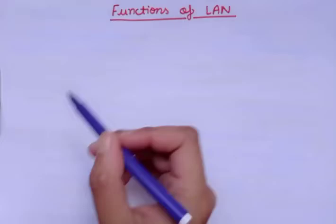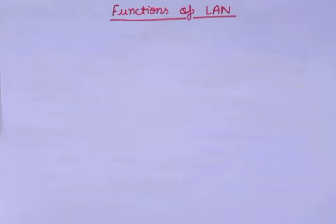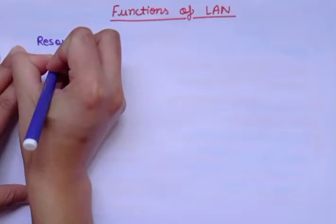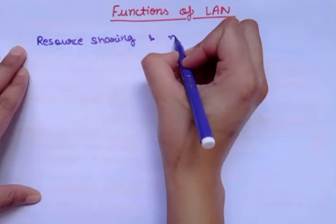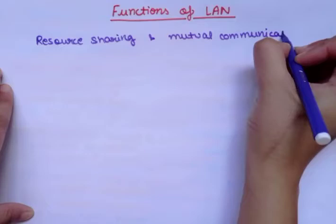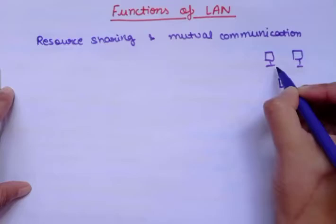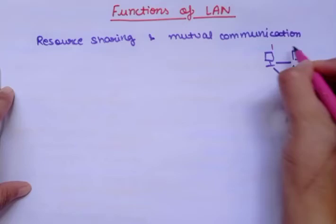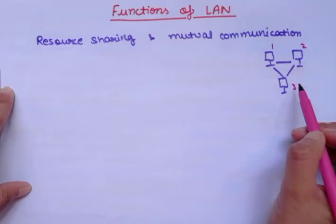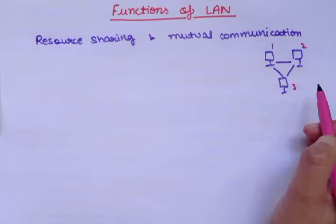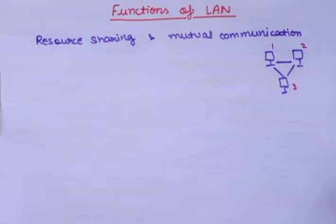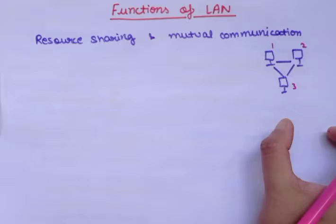Hi students, welcome to the channel. Today in this video we are going to cover some important functions of using LAN network. As we all know, the main function of LAN is to provide resource sharing and mutual communication. The main function of LAN is to share resources. Suppose there are two or more computer systems connected to each other with the help of LAN. We can share data between computers because LAN's range is very low, making it very easy to share data, and if some errors occur it becomes easy to return to the normal position of the LAN network. LAN network is generally used in an office or building.